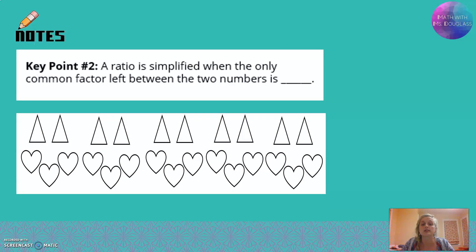A ratio is simplified when the only common factor left between the two numbers is the number 1. Remember that we said that our simplified ratio is 2 triangles to 3 hearts.